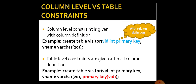The next topic is Column Level versus Table Level Constraints. A Column Level Constraint is given with the column definition. Consider a table called Visitor, having a primary key as Wid. You can also create a table with a Table Level Constraint, where constraints are given after all column definitions — for example, specifying PRIMARY KEY (Wid) after all columns. That is the only difference between Column Level and Table Level Constraints.